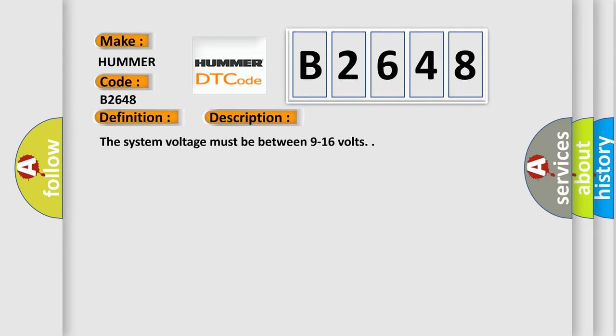The system voltage must be between 9 to 16 volts. This diagnostic error occurs most often in these cases: when the ambient light sensor signal voltage is greater than 4.9 volts.